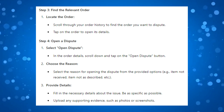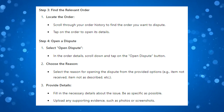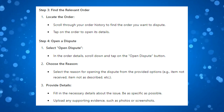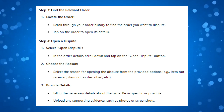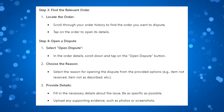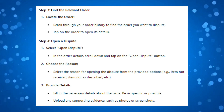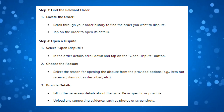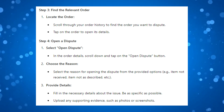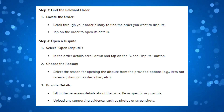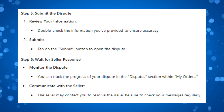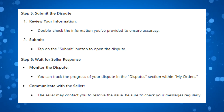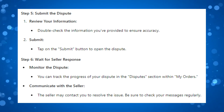On the order details screen, if you scroll down to the bottom, you're going to see an 'Open Dispute' button — just go ahead and tap onto that. Then select the reason for opening the dispute from the provided options, for example 'item not received' or 'item not as described.' Next, fill in the necessary details about the issue, make sure to be as specific as possible, and upload any supporting evidence such as photos or screenshots. Before submitting, double-check the information you provided to ensure accuracy, then simply tap the submit button to open the dispute.